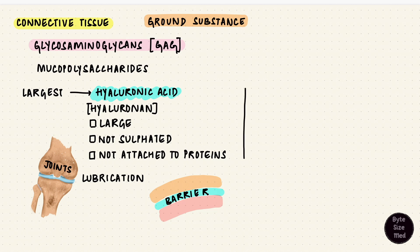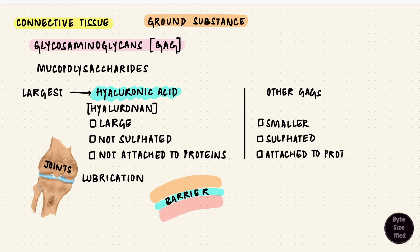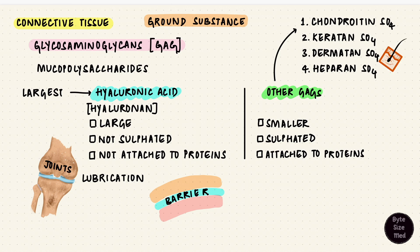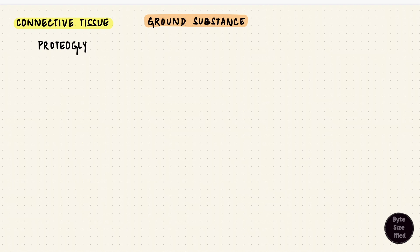Other glycosaminoglycans are smaller, sulfated, and attached to proteins. Four common names: chondroitin sulfate, keratan sulfate, dermatan sulfate, and heparan sulfate. These are located in different parts of the body — dermatan sulfate in the dermis of the skin, heparan sulfate in the basement membrane of the kidney, chondroitin sulfate in bones and joints. These are all attached to proteins, and together they form proteoglycan aggregates.